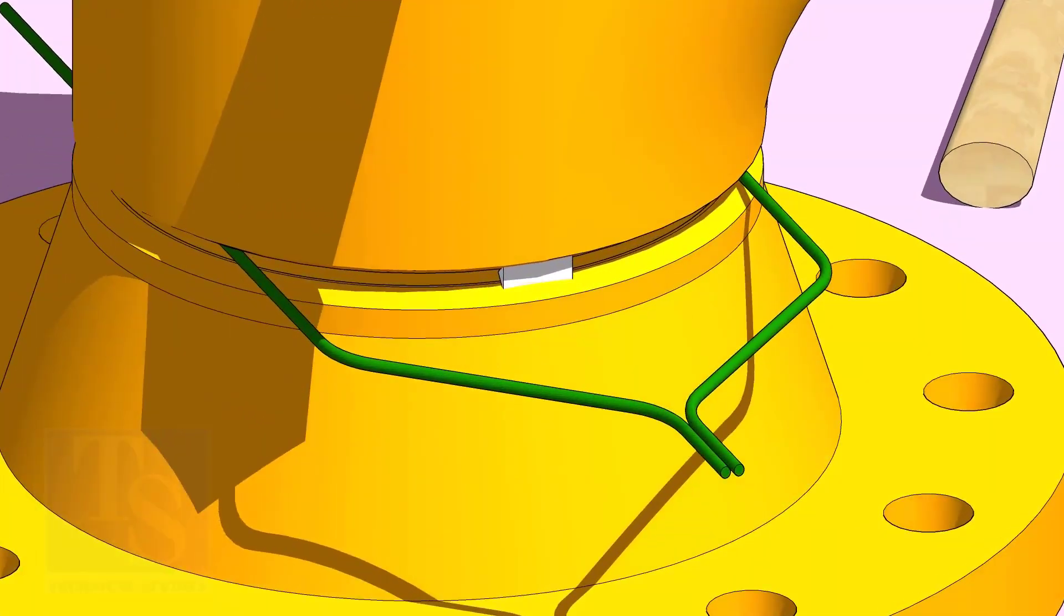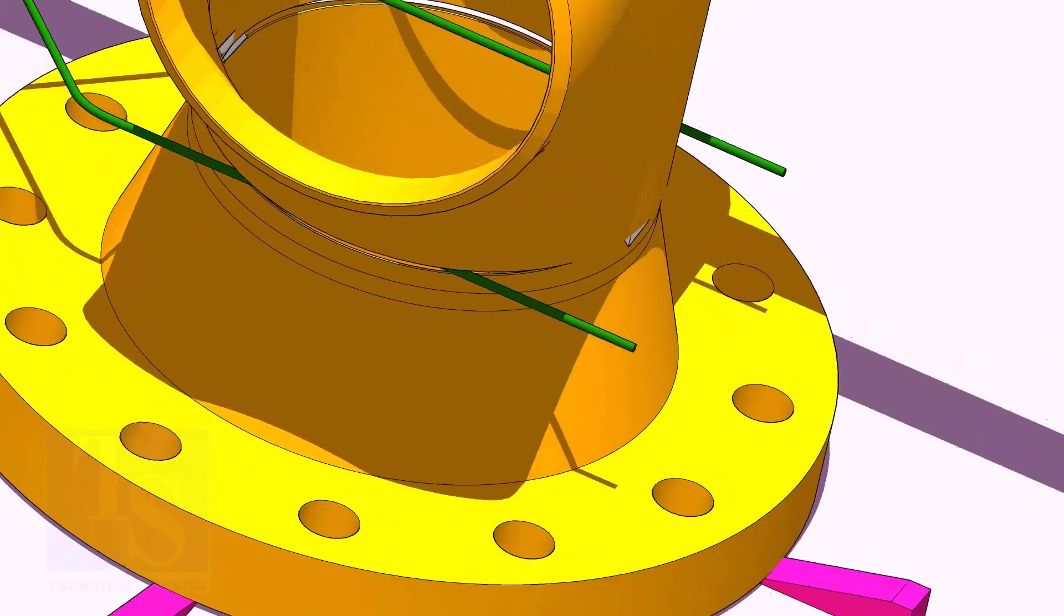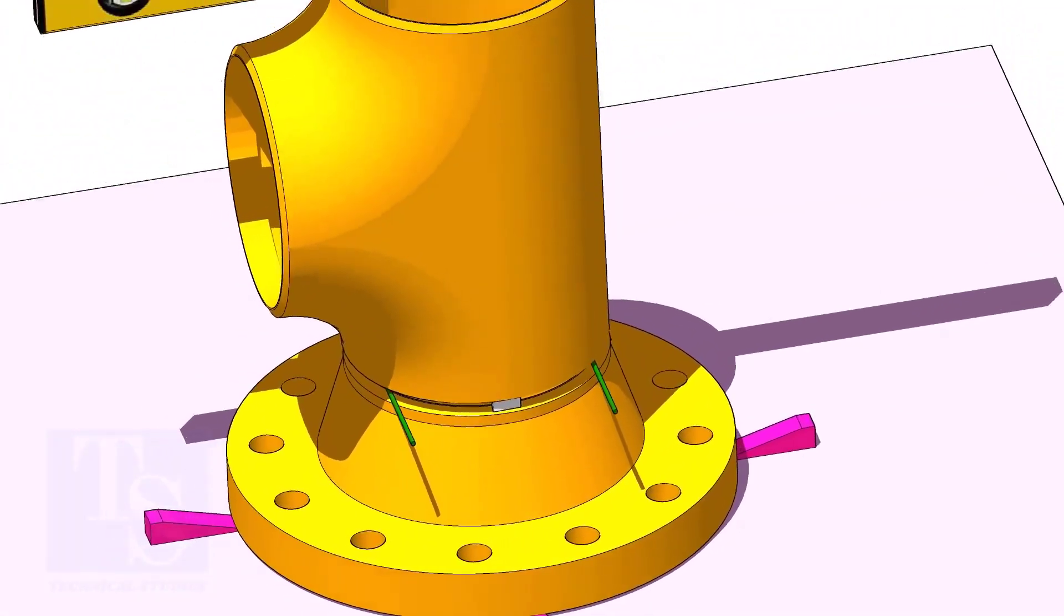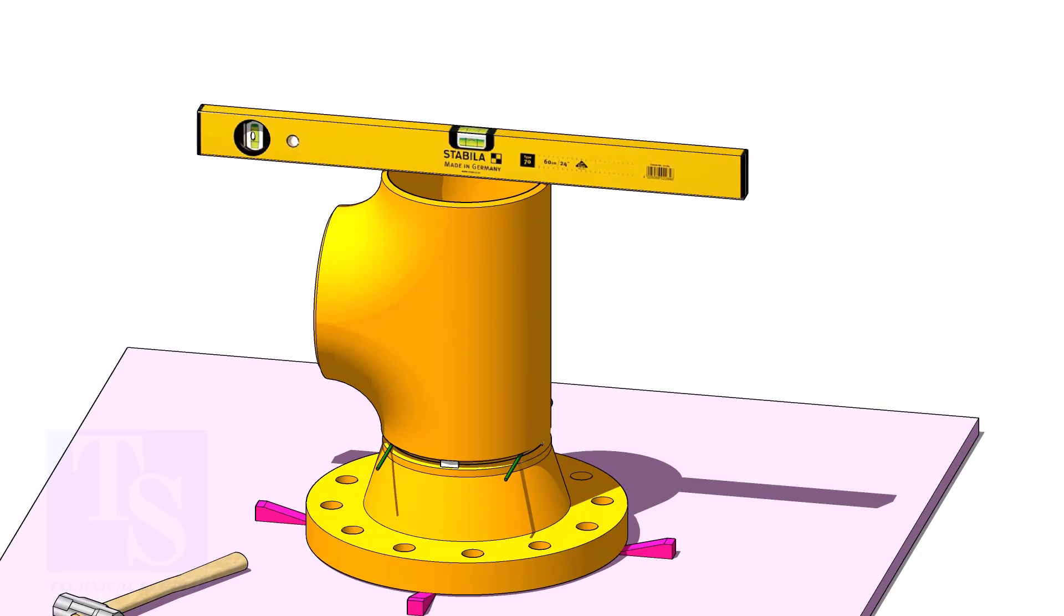Check the top level and tack weld. The sequence of the tack welding shall be 0 to 180 degree and 90 to 270 degree.